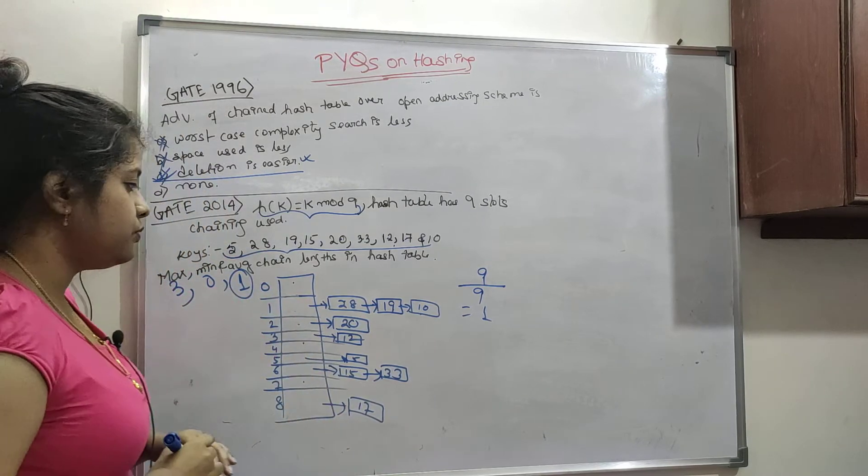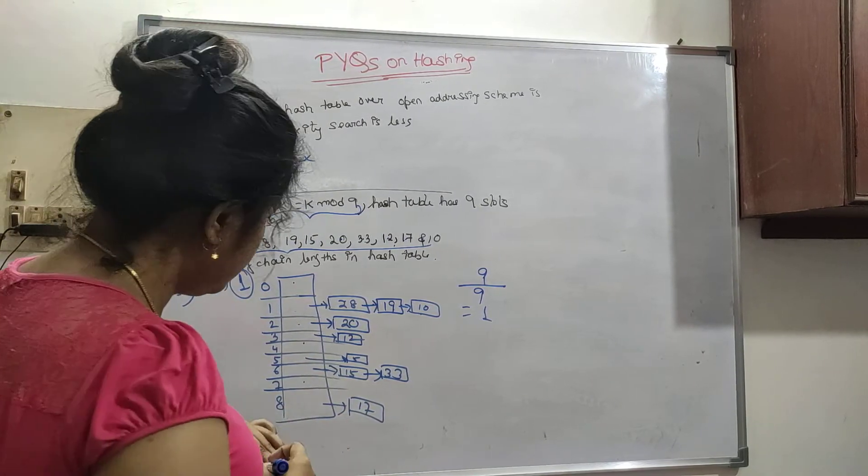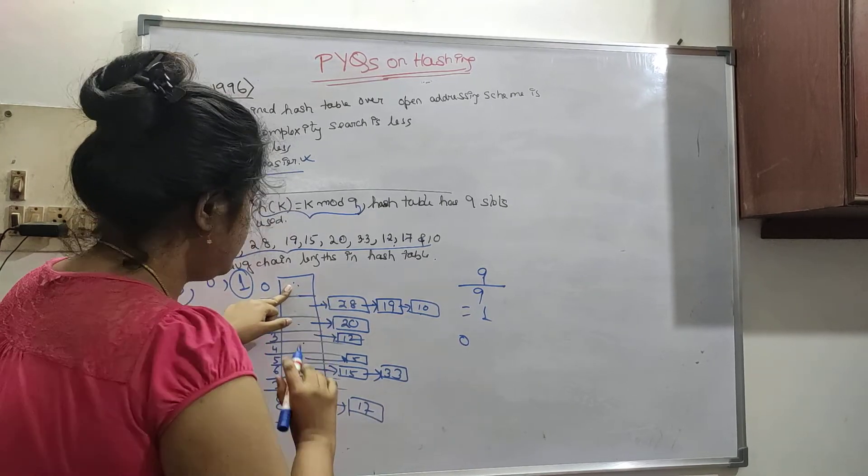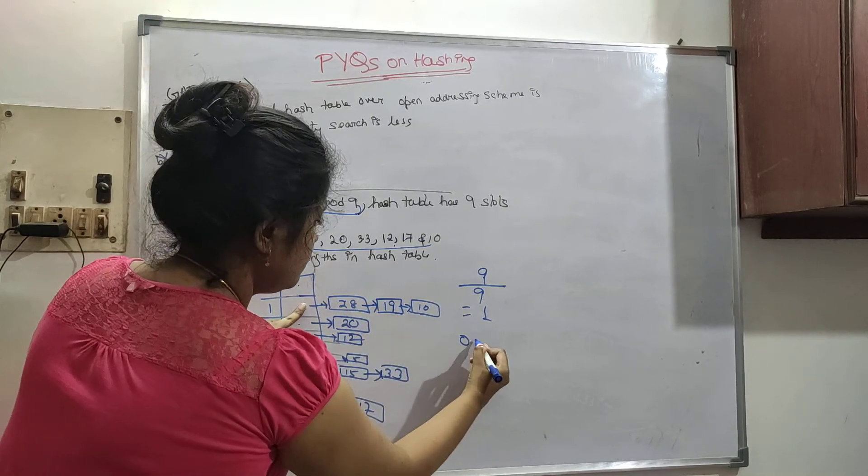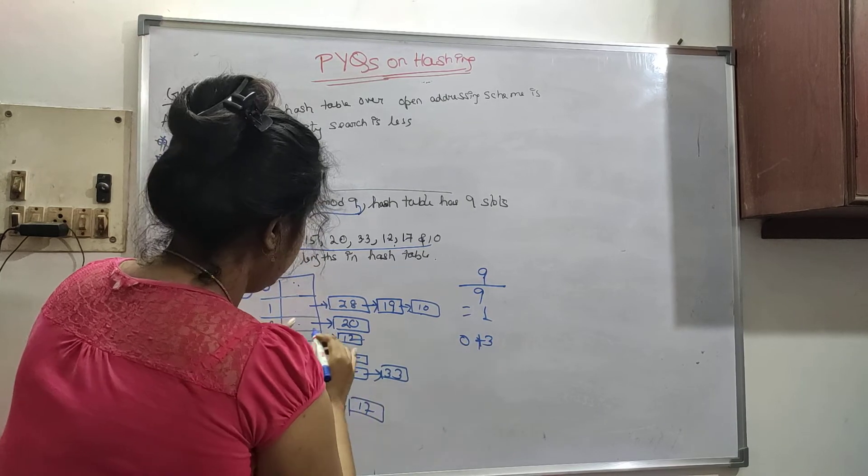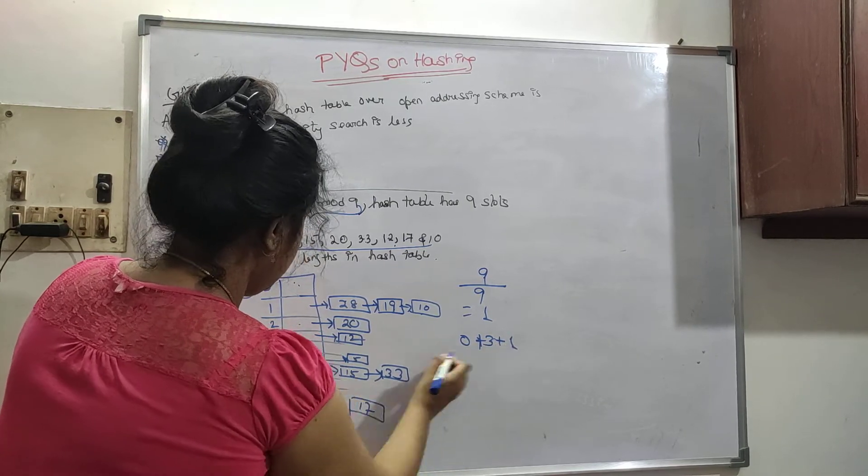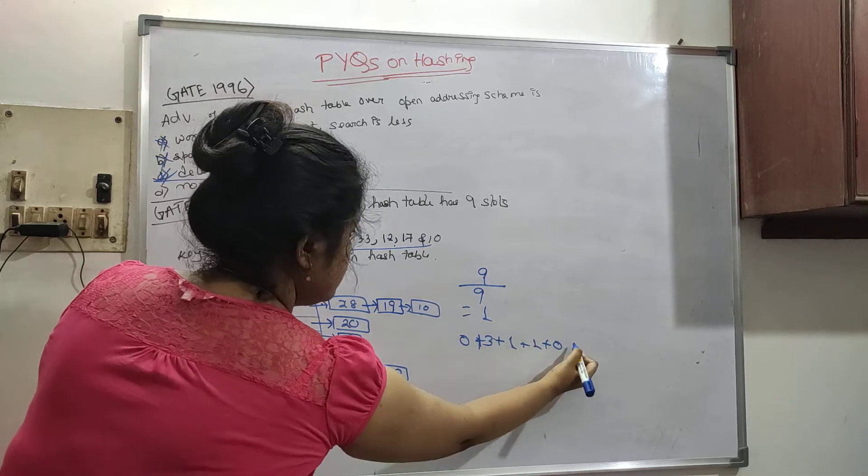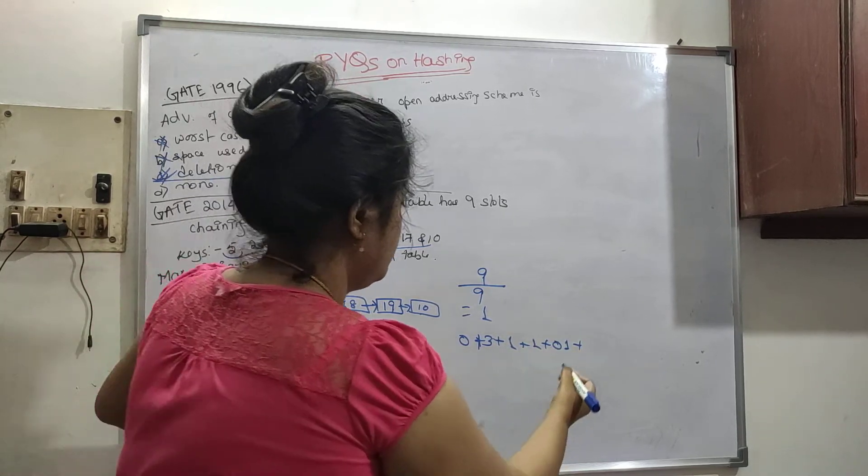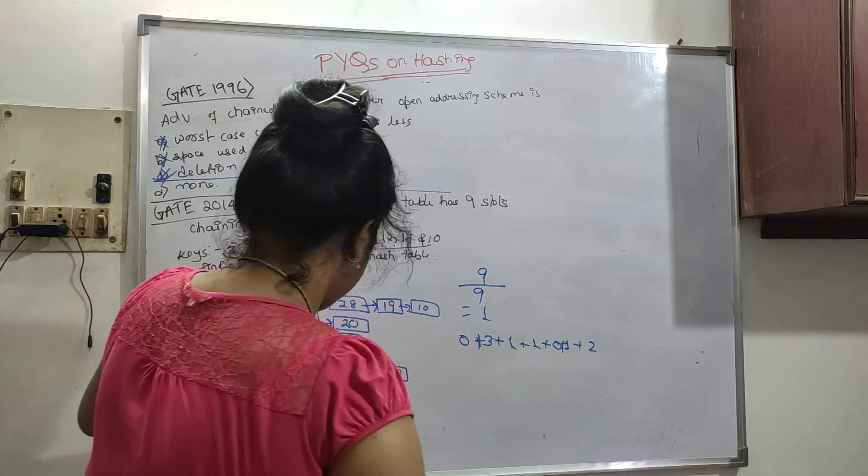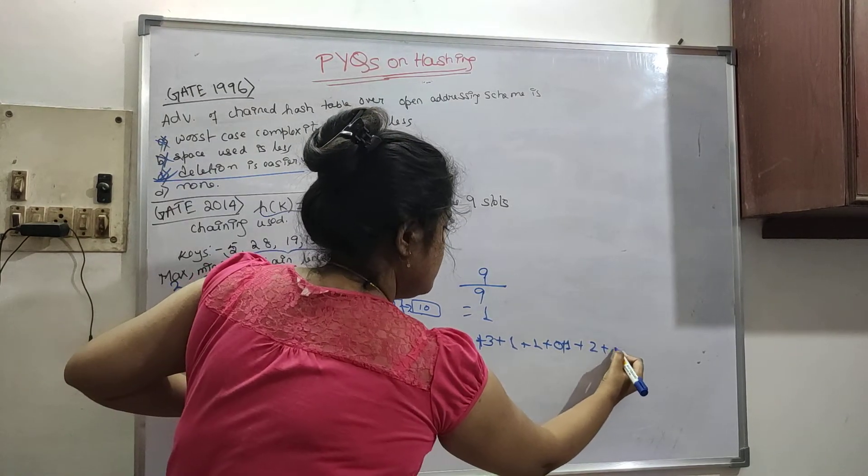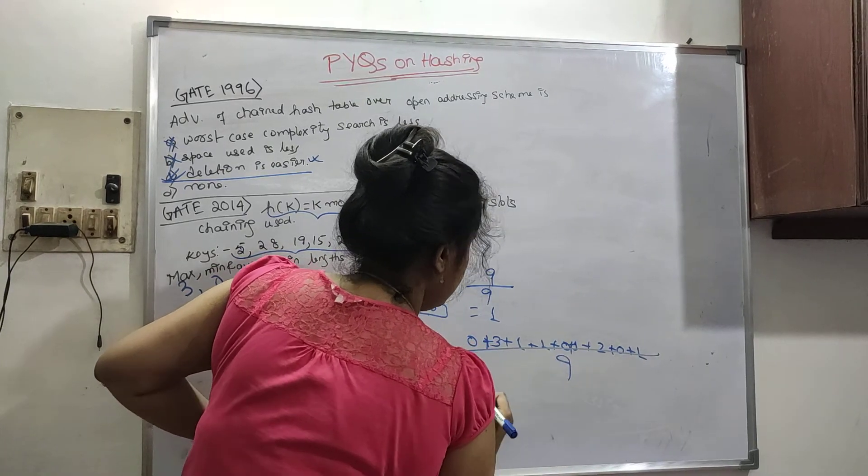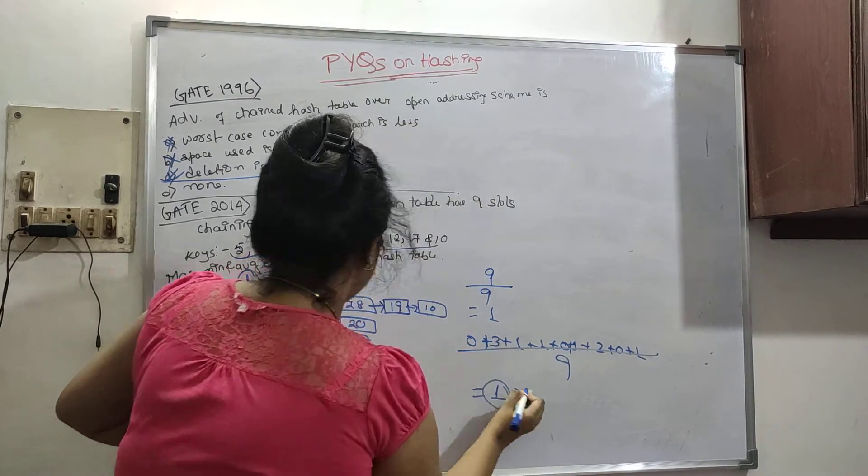In another way you can do is that total 0 here, 0 elements are there, here 3 length is 3, here 1, here again 1, here 0, here 1, here 2, then again 0, then again 1 divide by 9. So it will also come as 1.